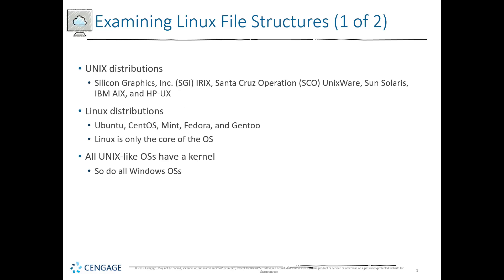Linux was based off of Unix, and this includes Silicon Graphics Inc. (SGI), Santa Cruz, Sun Solaris, IBM, and HP — these are all common distributions of Linux. There are still distributions like Ubuntu, Red Hat, Kali, and many more. When we're looking at Linux distributions, that's where Kali, Red Hat, Mint, Fedora, and Ubuntu all come in.